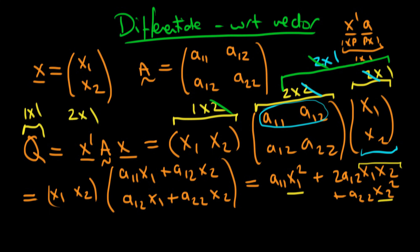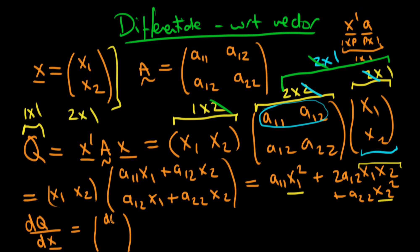We've defined this quantity Q. We now need to think about what it means to find the derivative of Q with respect to our vector x. What dimension should this have? From the last video, when we differentiate with respect to a particular vector, the result is a vector of the same dimension as the thing we differentiate with respect to. So this is going to be a 2 by 1 vector, with the top component DQ/Dx1 and the second component DQ/Dx2.